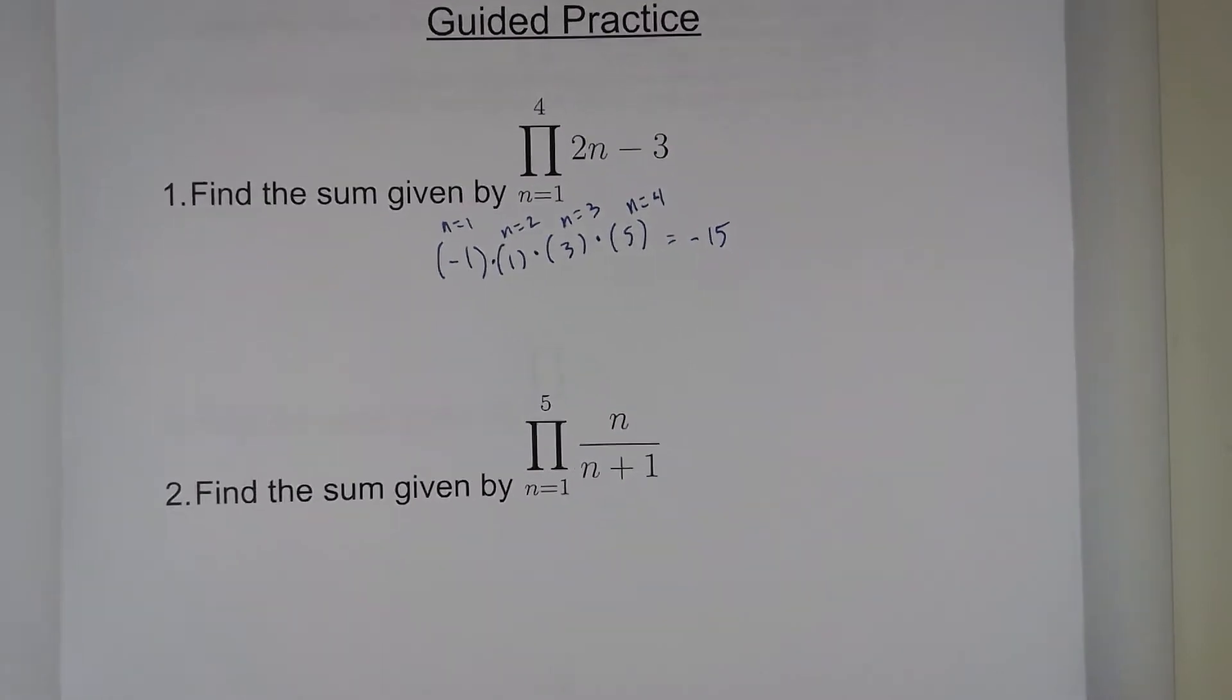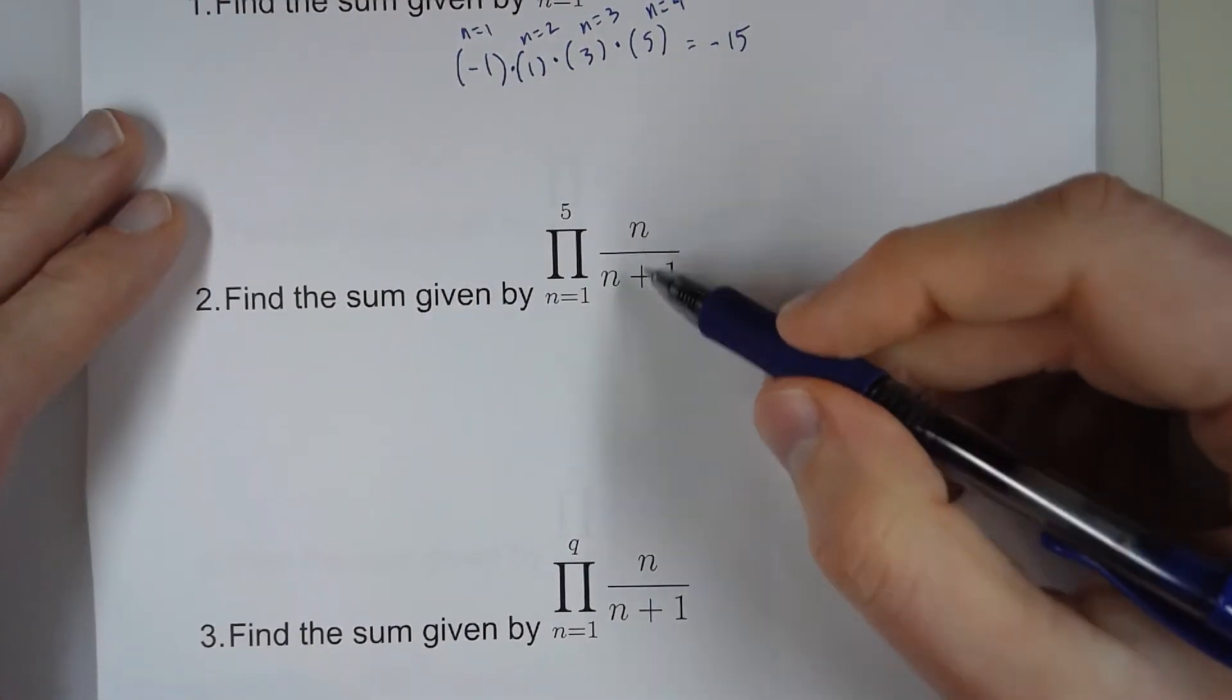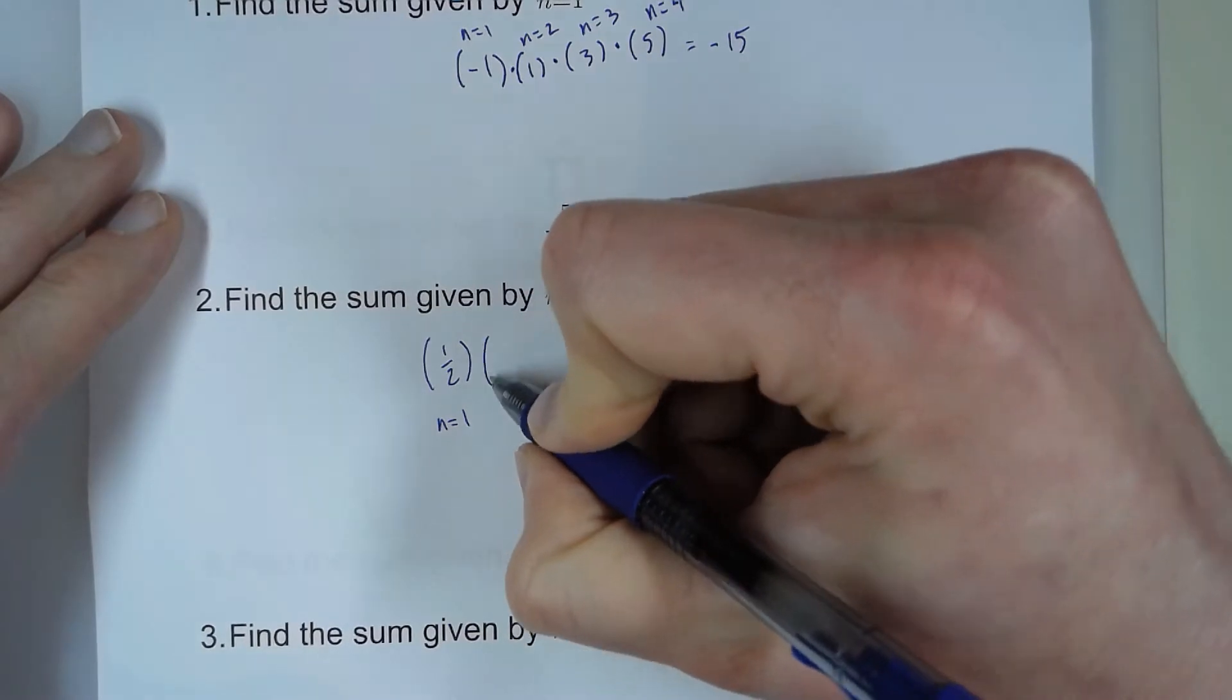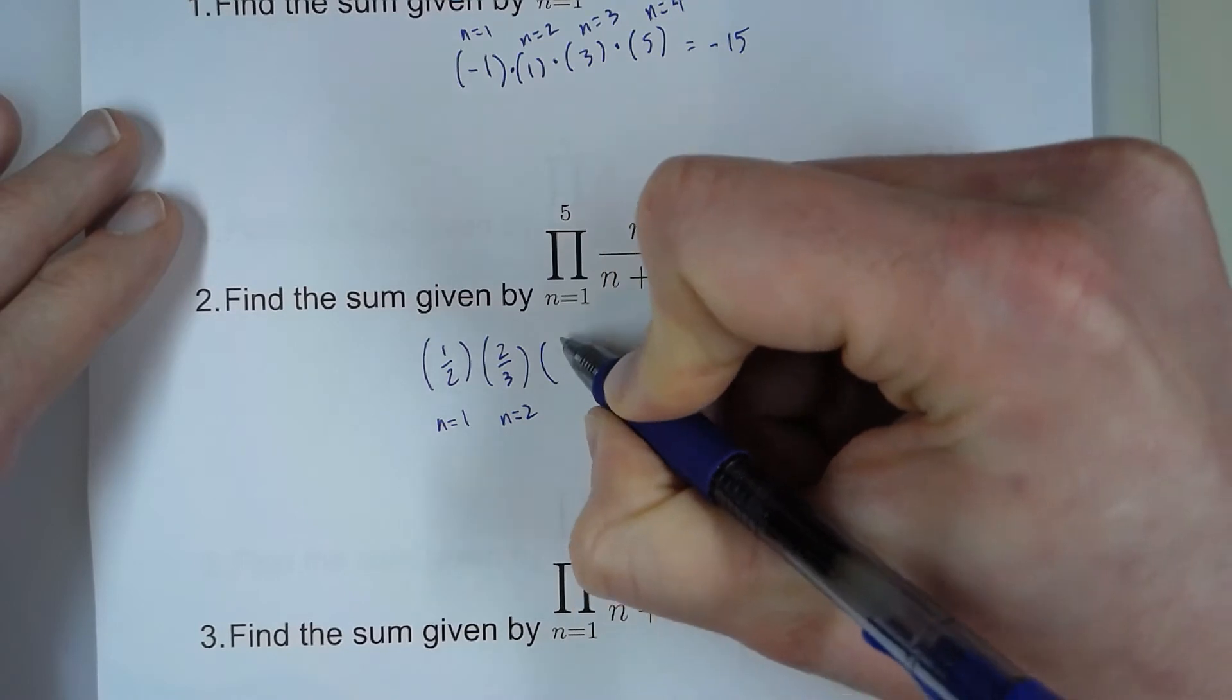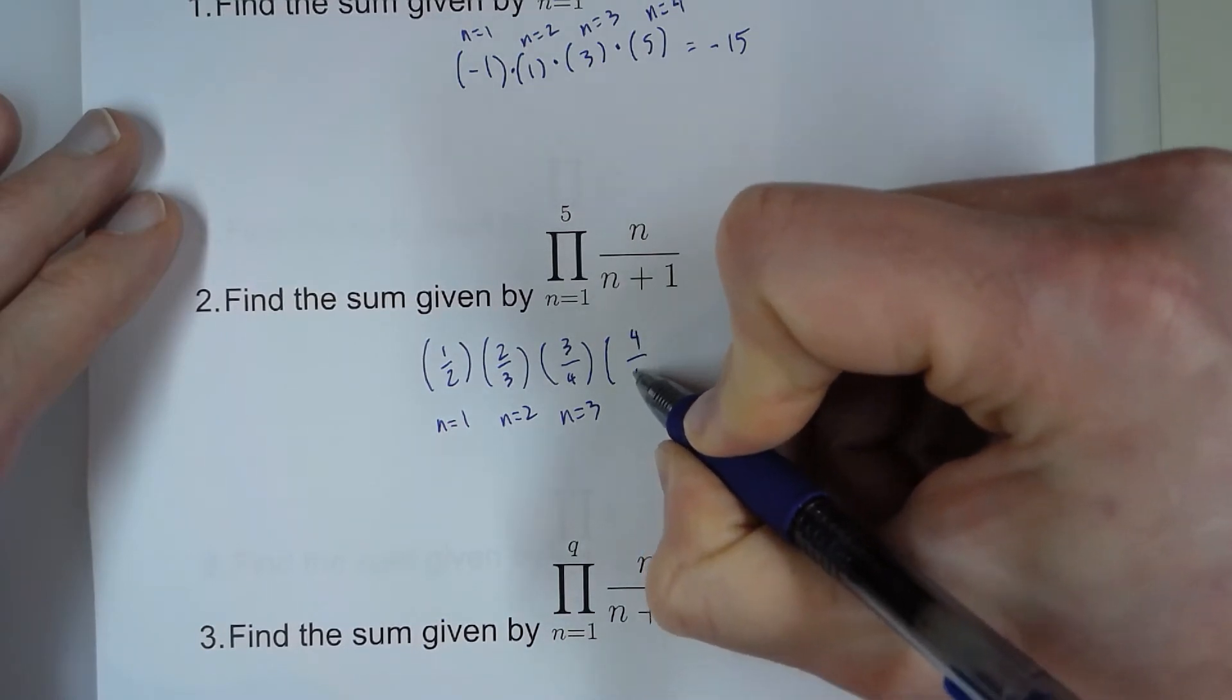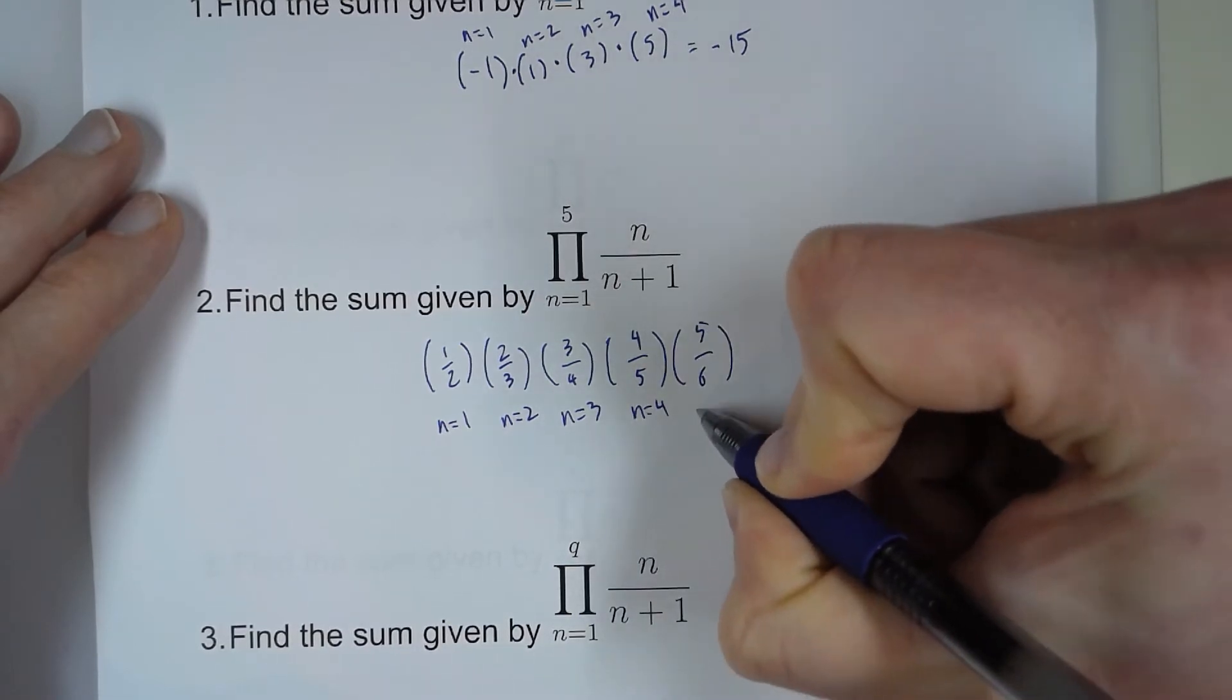With number 2, here we're plugging in the numbers from 1 to 5. When n equals 1, it's going to be 1 on top and 2 on the bottom. When n equals 2, it's 2 on top and 3 on bottom. When n equals 3, it's 3 on top and 4 on the bottom. When n equals 4, it's 4 on top and 5 on bottom. When n equals 5, it's 5 on top and 6 on the bottom.